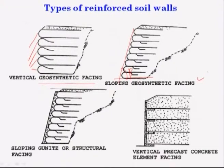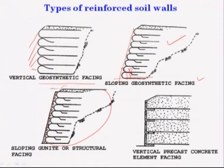The third one is sloping with structural facing. In this case, first prepare the reinforced soil wall — a sloping soil wall like this. Then, a structural facing is placed over the side after the reinforced soil wall has been prepared.